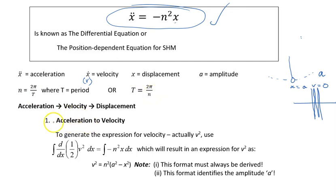Starting with this expression for acceleration and moving back to velocity. Like I said, we could replace our acceleration with d/dx of a half v squared equals acceleration. And what we're going to do is integrate both sides of that expression with respect to x.